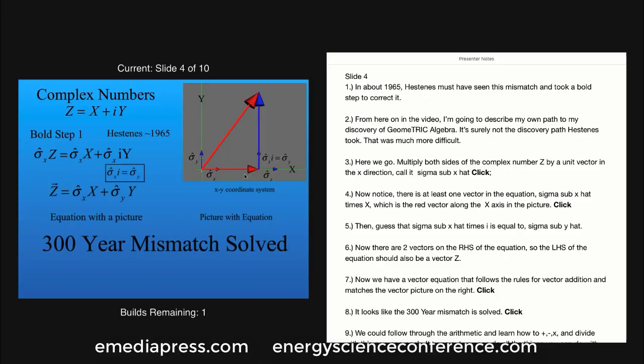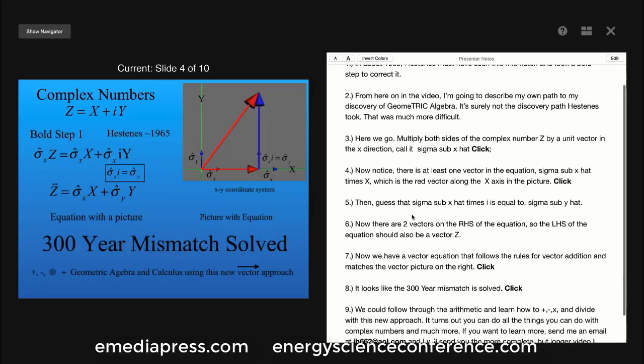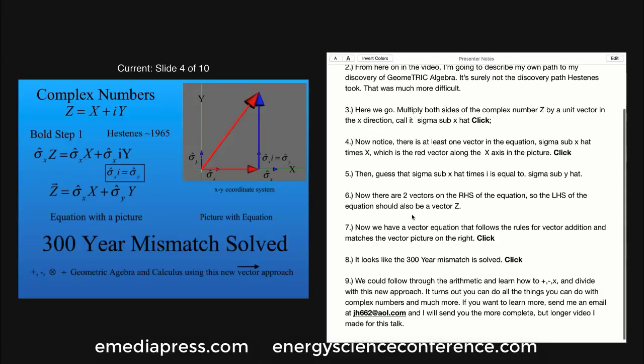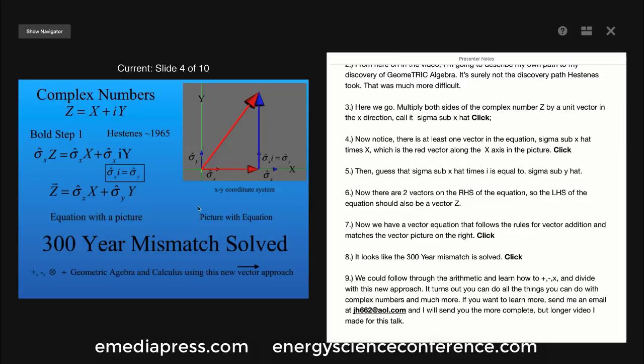It looks like the 300-year mismatch is solved. We could follow through the arithmetic and learn how to add, subtract, multiply, and divide with this new approach. It turns out that all the things you can do with complex numbers you can do with this algebra and much more. If you want to learn more, send me an email and I will send you the more complete but longer video I made for this talk.